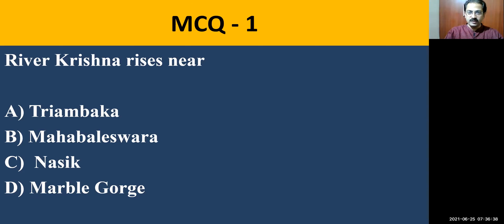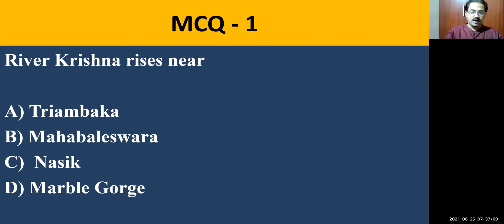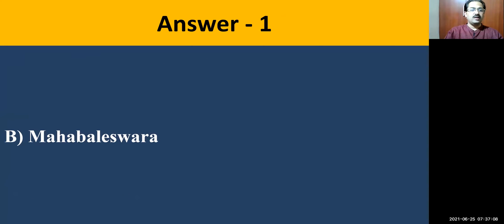River Krishna rises near — you need to know the birthplace of all the rivers. In our textbook, nearly seven to eight different South Indian and even North Indian rivers are mentioned. You need to know the tributaries and also the birthplace. Option A: Triambaka. Option B: Mahabaleshwara. Option C: Nasik. Option D: Marble Gorge. The correct answer is Mahabaleshwara. It is in Maharashtra, in the Western Ghats or Sahyadri, where River Krishna rises.